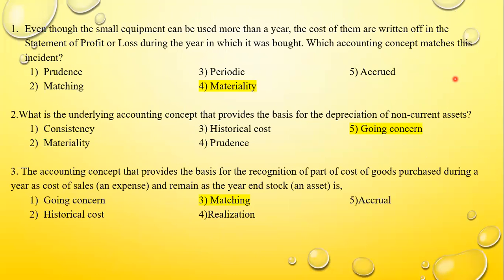MCQ question one: Even though small equipment can be used for more than a year, the cost is written off in the statement of profit or loss during the year in which it was bought. Which accounting concept matches this? The answer is the materiality concept. Question two: What is the underlying accounting concept that provides a basis for the depreciation of non-current assets? The answer is the going concern concept — because we depreciate assets over time assuming the business will continue.